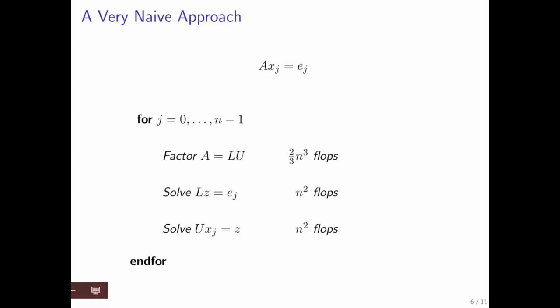Now here's a very naive approach. For each of the columns that you want to compute, that's why there's a for loop here, you factor the matrix A, and then you do two triangular solves, much like you learned in the last two weeks.